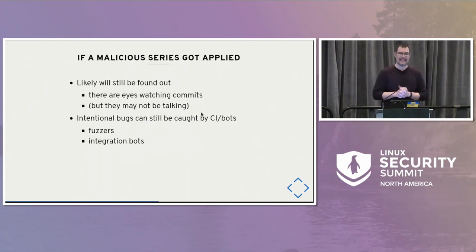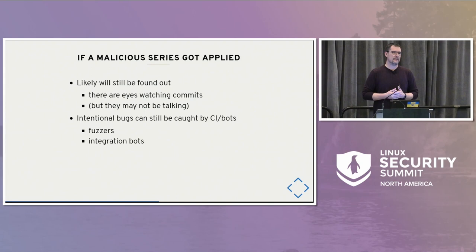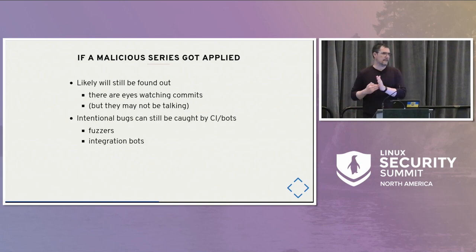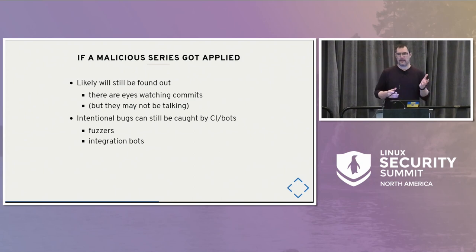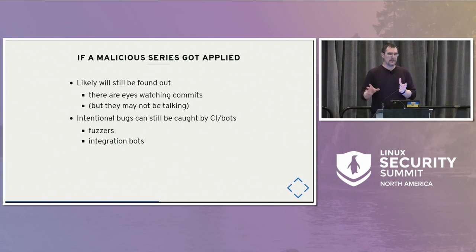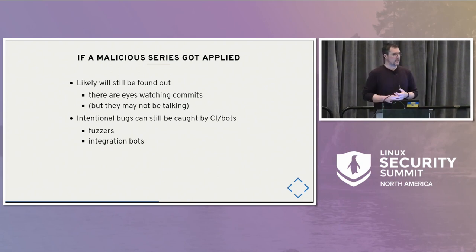If a malicious series did get applied despite all of this failing, it will likely still be found out — there are eyes watching commits, we know this for a fact. The problem is they may not be talking to us; they may be watching commits and putting them into their own stash of zero-days for future use. Intentional bugs masquerading as a simple overflow or other vulnerability could still be found by CI, a fuzzer, or a sub-integration bot. We do have a decent set of fuzzers and CI tools that test change sets for bugs, and this will catch intentional bugs as well.